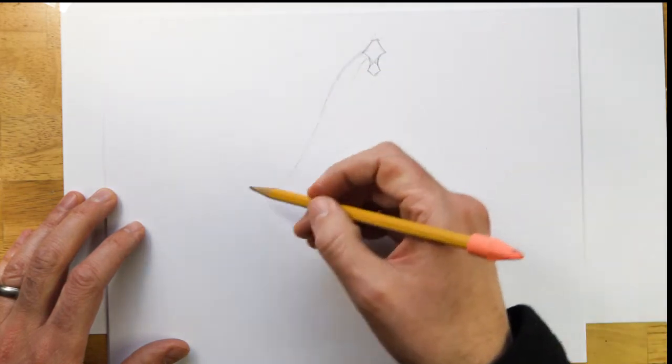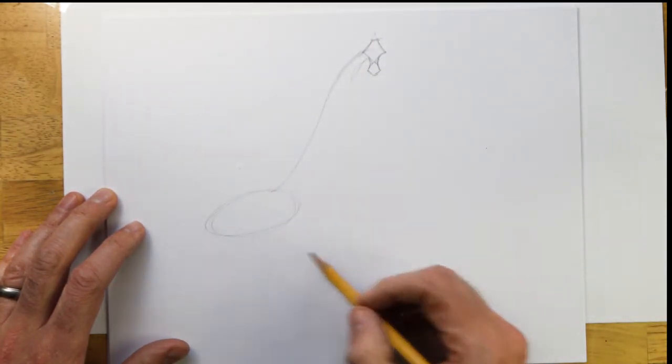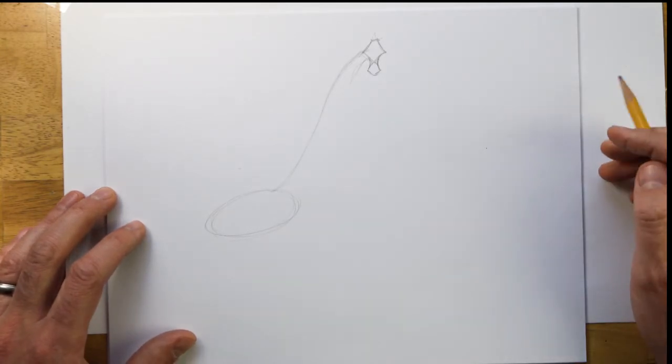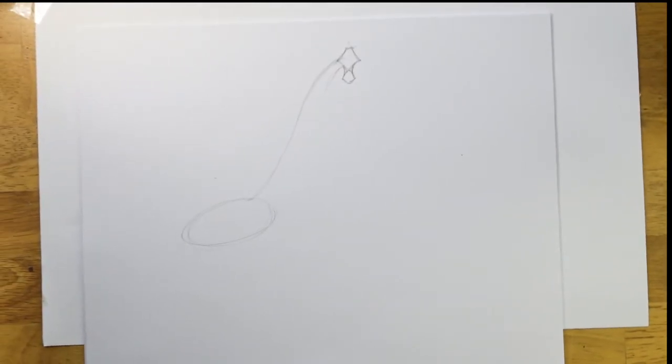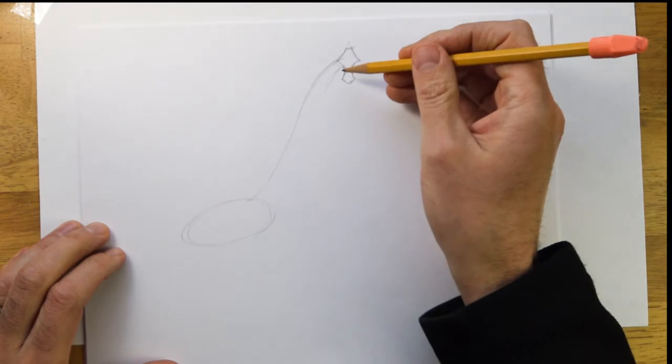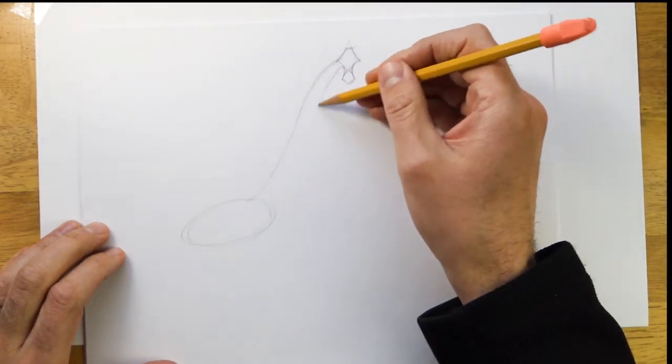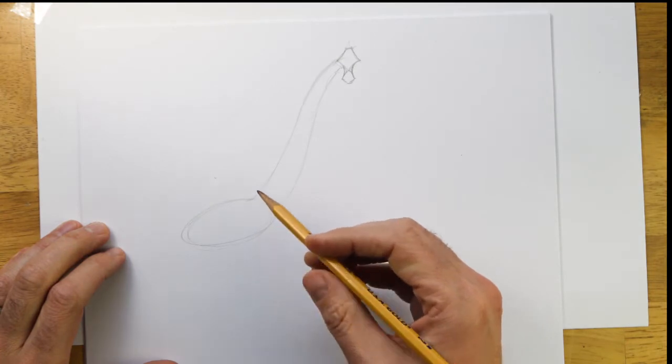Okay so there's the neck. For the body, we're going to put in an oval. Just adjust the camera so I can see what I'm doing. Perfect. It's a little more thick towards the body.